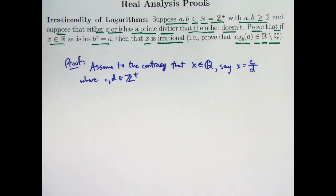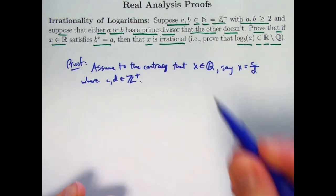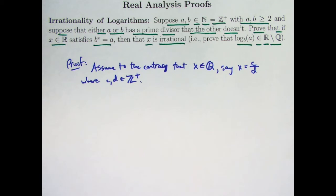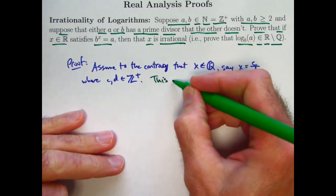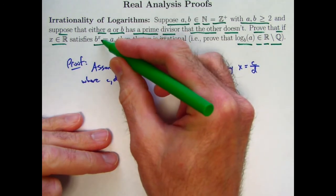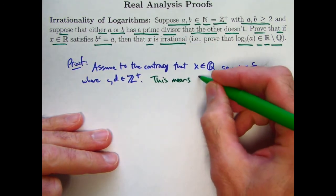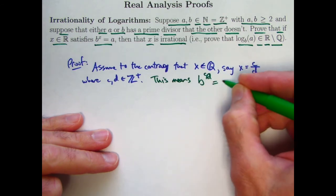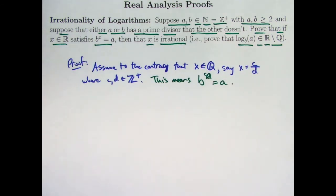So if this assumption, to the contrary, leads to some sort of logical contradiction, that means the assumption must be wrong. And therefore, x cannot be an element of Q. It must be an irrational number instead of rational. What can you say from this? Well, the first thing you could say is something pretty obvious. You can go ahead and replace the x with c over d in this equation.